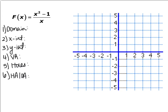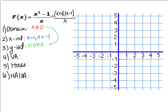Now let's try x squared minus 1 over x. Factor completely first: the numerator factors into x plus 1 times x minus 1, and the denominator does not factor. Domain: x cannot equal 0. X-intercepts: set the numerator equal to 0, so x equals plus or minus 1. Y-intercept: x equals 0, but check the domain — x cannot equal 0, so there are no y-intercepts.